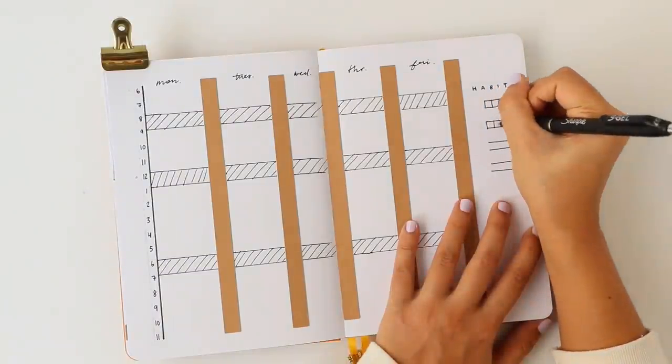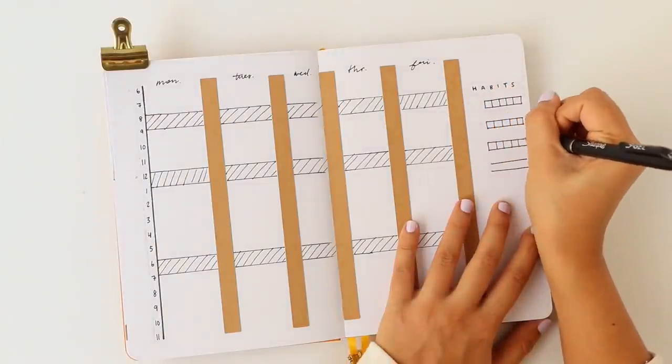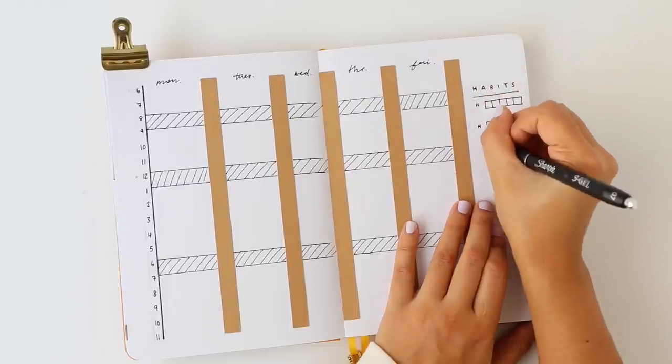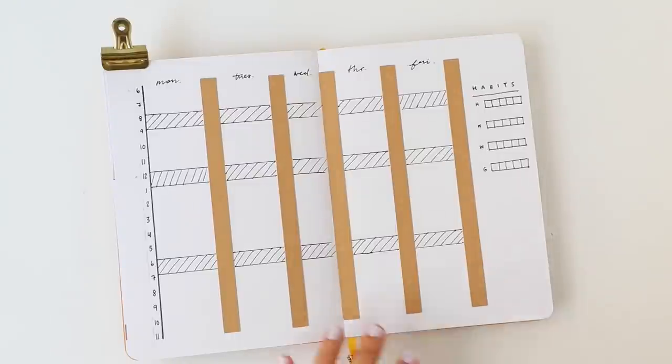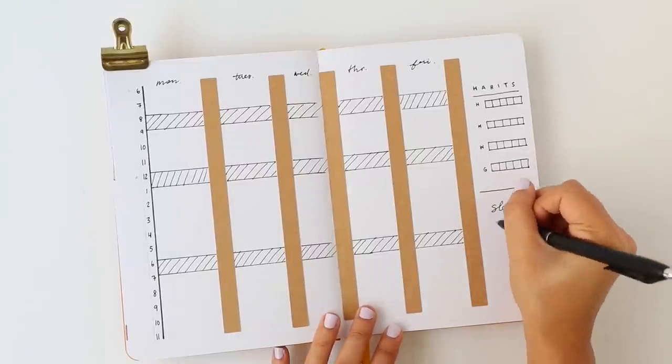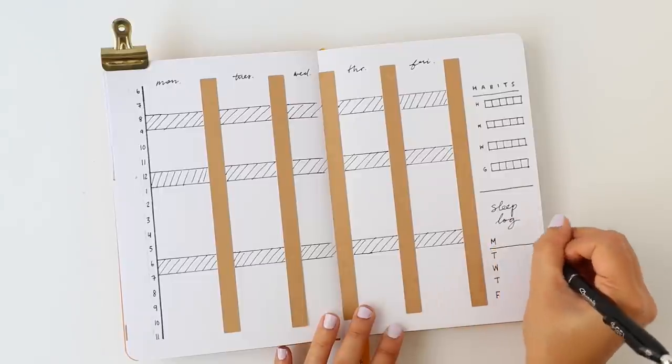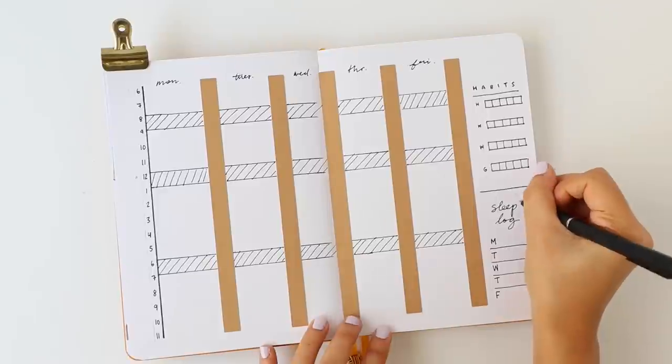In the spirit of self-care there was also enough space on the right of the page to add in some habit trackers. The classic habit trackers for me are hydration, meditation, workouts, and expressing gratitude and there's also a section to log how many hours of sleep I get each night because quality sleep is so important to being able to function.